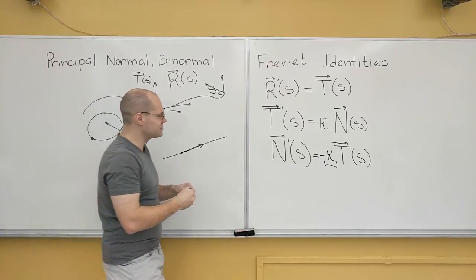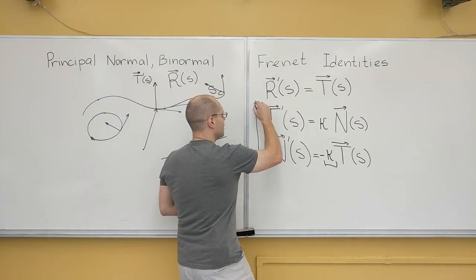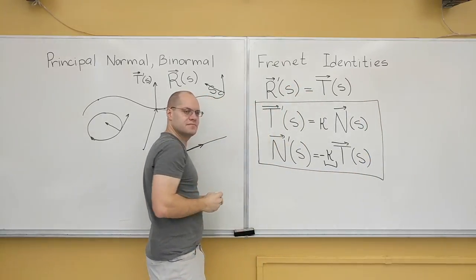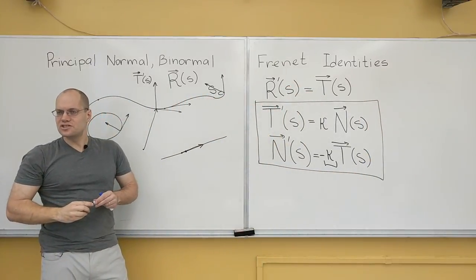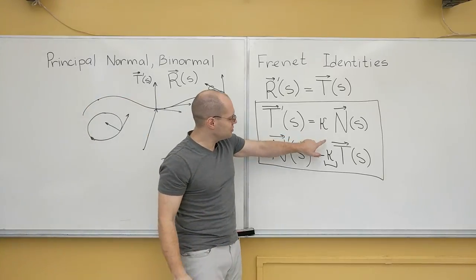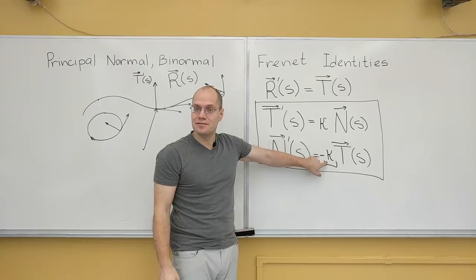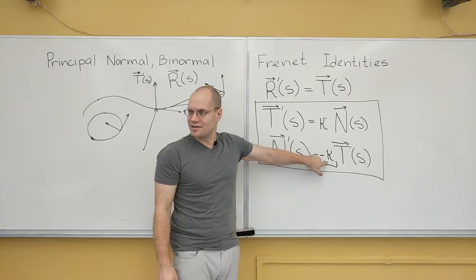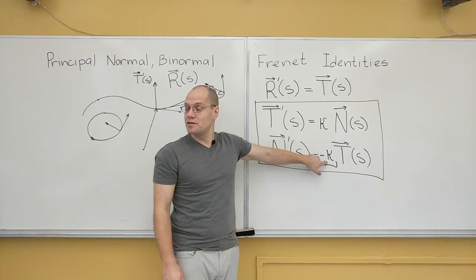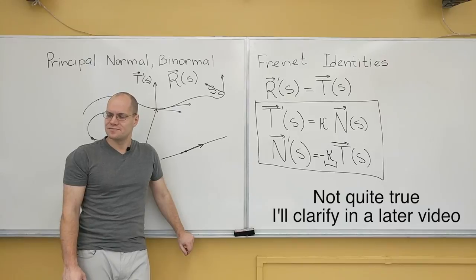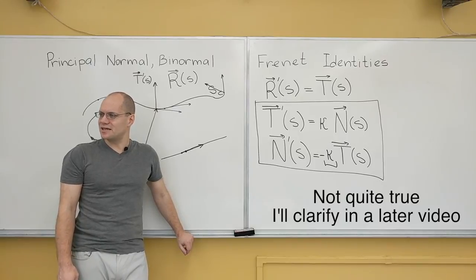If you look at this, it's almost like a system of ODEs. Which tells you, by the way, that if someone prescribes how kappa, the principal curvature, depends on arc length, you can rebuild the curve by solving the system of ordinary differential equations. That's a fantastic insight.